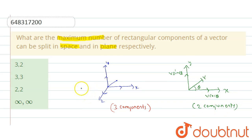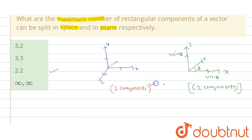So we got the answer - the maximum number of rectangular components of a vector can be split in space is three components and in its own plane is two components. So option one is the correct option.